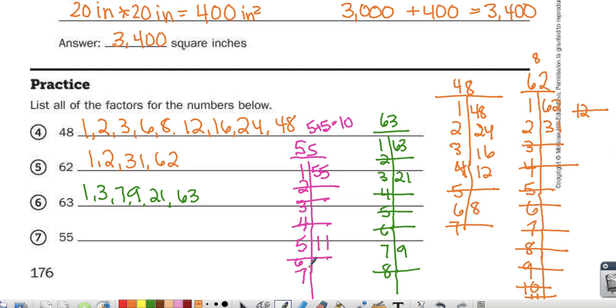I know 7 times 8 is 56, so that wouldn't be a factor. 8 times 7 is 56, not a factor. 9 times 6 is 54, not a factor. And 10 is not a factor because it doesn't end in 0, and 11 is listed. So my factors of 55 are 1, 5, 11, and 55.